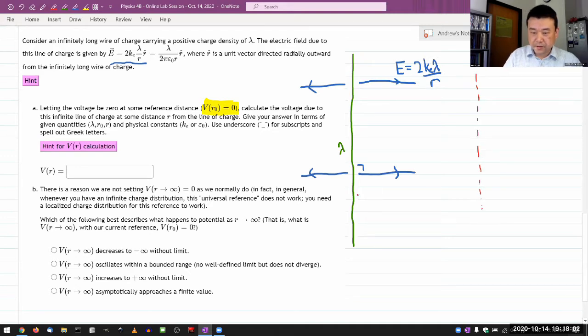And I'm going to say, okay, at that distance R0, I'm going to say my voltage at this distance is equal to zero. That's my reference point. And all the other voltage values are calculated as a difference from here.